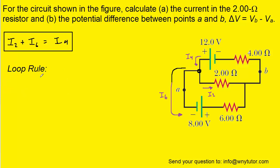We will next apply Kirchhoff's loop rule. We select an arbitrary starting point and move around the lower loop of the circuit in a counterclockwise direction. As we go around that loop we need to keep track of potential changes, delta V's.